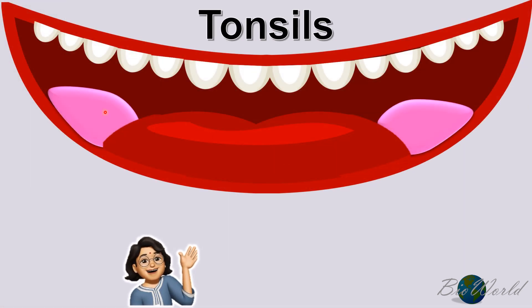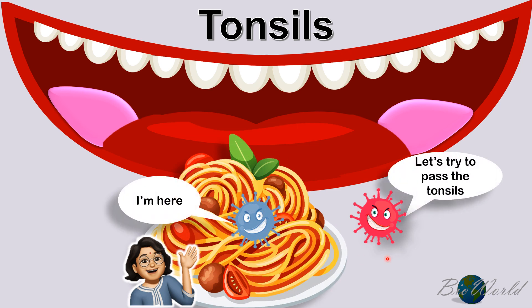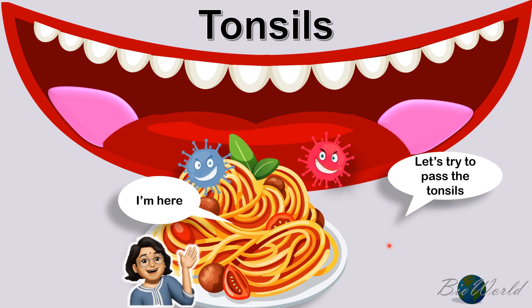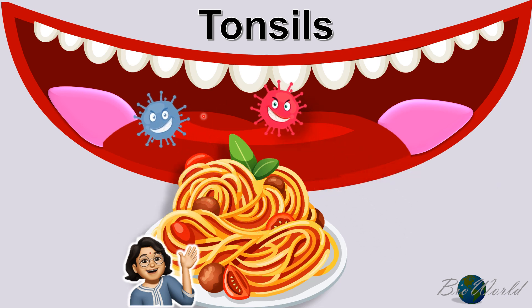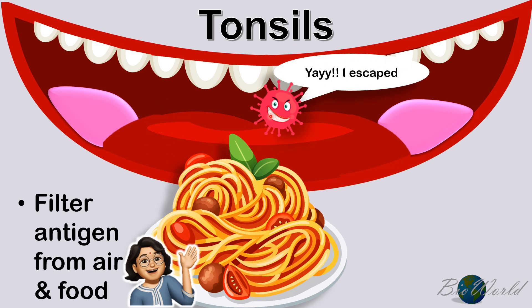The first organ encountered by the pathogen will be the tonsils, found in our throat. The pathogen may enter through the food we eat or even through the air we breathe. When the pathogen enters our mouth, the tonsils will help to filter the antigen and destroy them. However, some of the pathogens may still enter the digestive system.